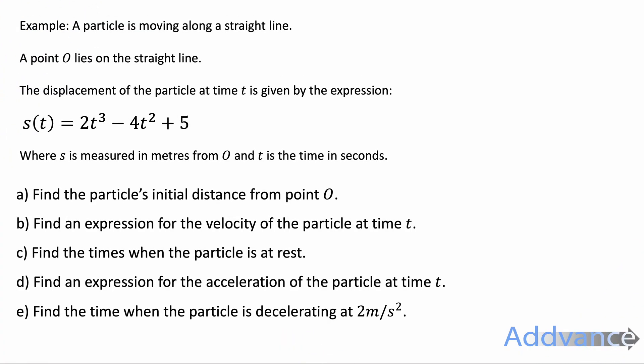We're going to look at an exam question now — a typical GCSE/IGCSE exam question. A particle is moving along a straight line. Point O lies on the straight line. The displacement of the particle at time t is given by s(t) = 2t³ − 4t² + 5, where s is measured in metres from O and t is the time in seconds. There are five parts and I'm going to go through them one by one.